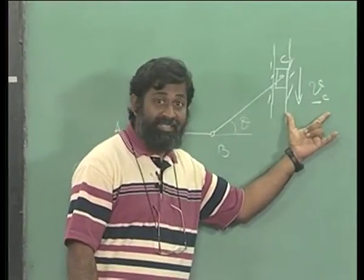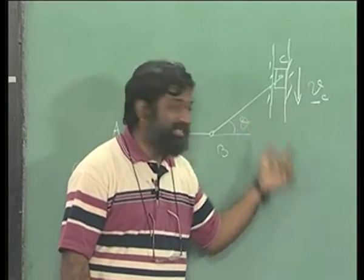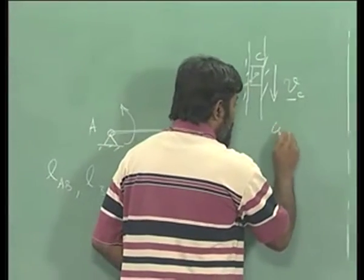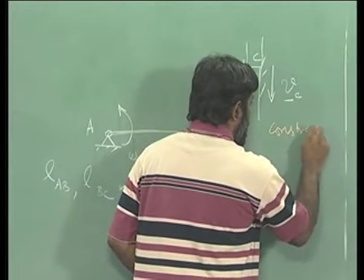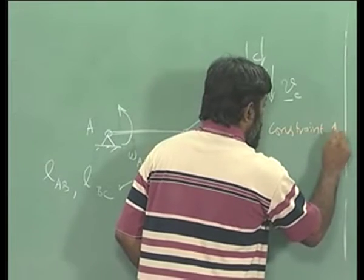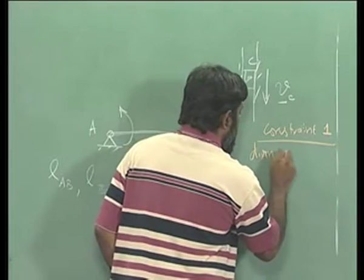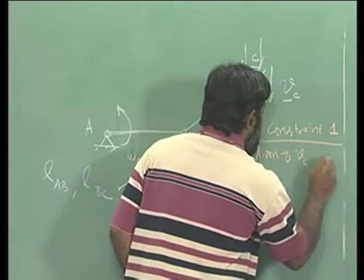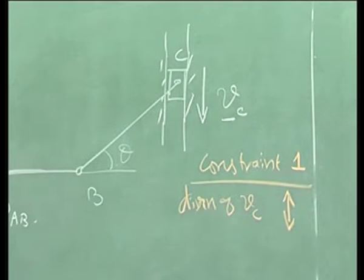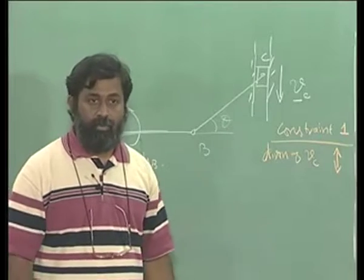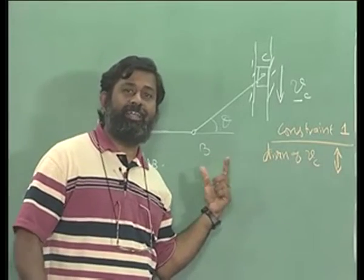The direction of VC is fixed as you can see here. This is the constraint. If you can identify the constraint, constraint number one, what is that? Direction of VC is vertical. That's something we know. The velocity of this is let's say given, we will come to that. Before that, we will identify the constraints.